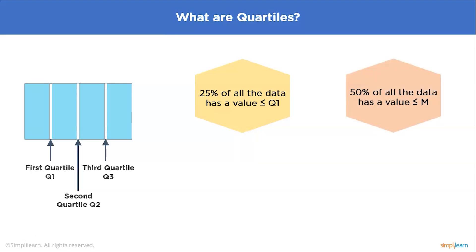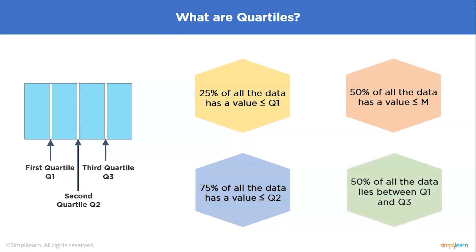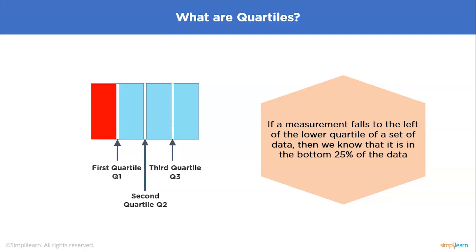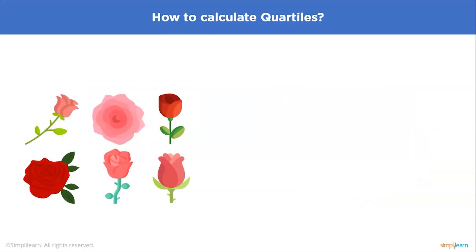Twenty-five percent of all the data has a value less than or equal to Q1. The second quartile, which is also the median, has 50 percent of all the data below it. Seventy-five percent of all the data has a value less than or equal to Q3, and 50 percent of all the data lies between Q1 and Q3. If a measurement falls to the right of Q3, it is in the top 25 percent; if it falls to the left of Q1, it is in the bottom 25 percent.